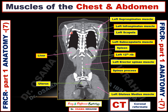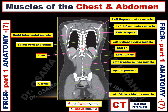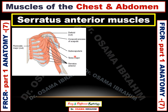The muscle in between the ribs is called the intercostal muscle, which comprises three groups of muscles. The arrow here refers to the right intercostal muscle. This arrow refers to the CSF within the spinal canal and the spinal cord. This diagram shows the serratus anterior muscles appearing anteriorly at those ribs.